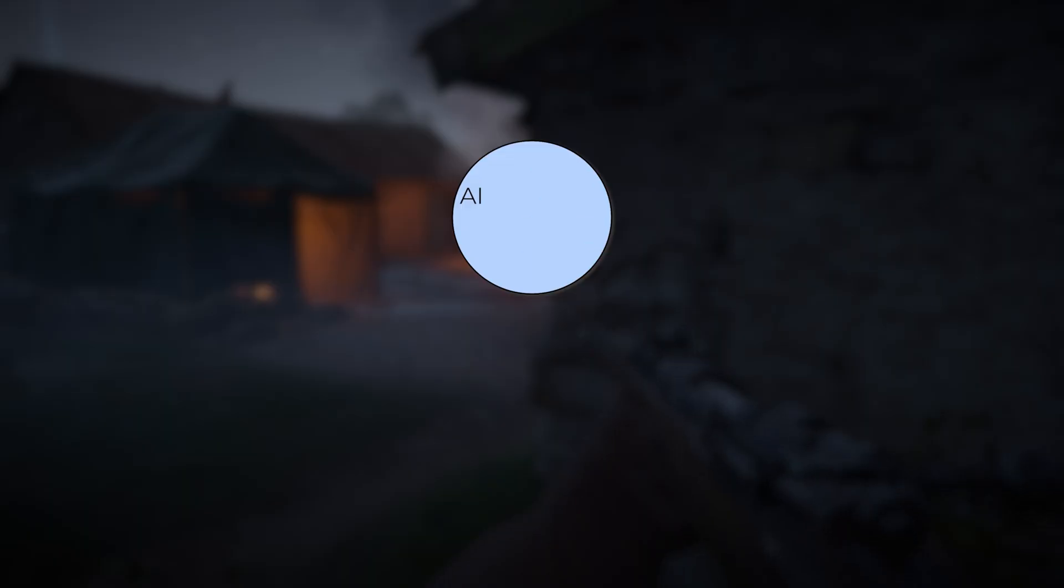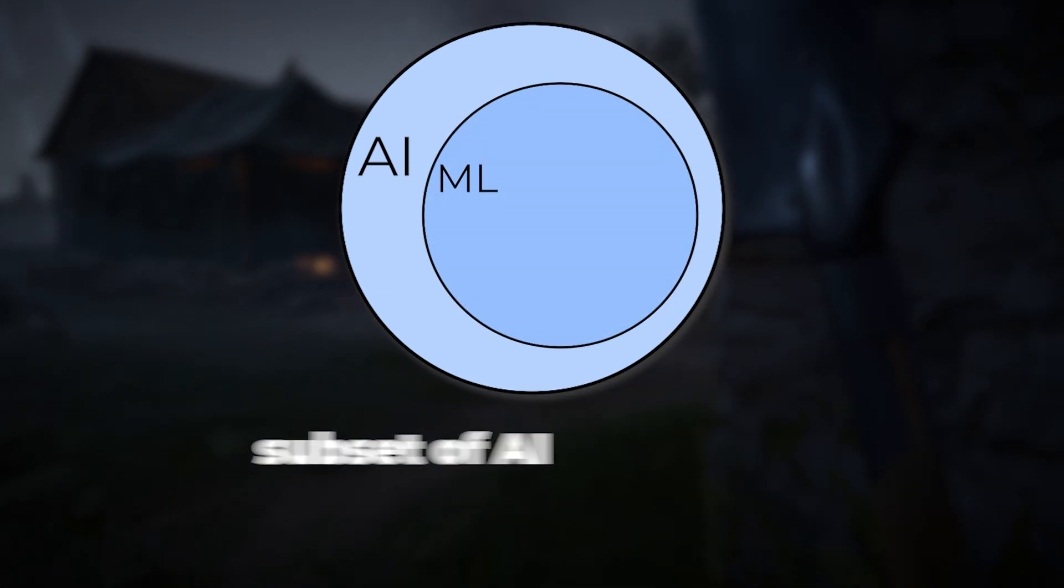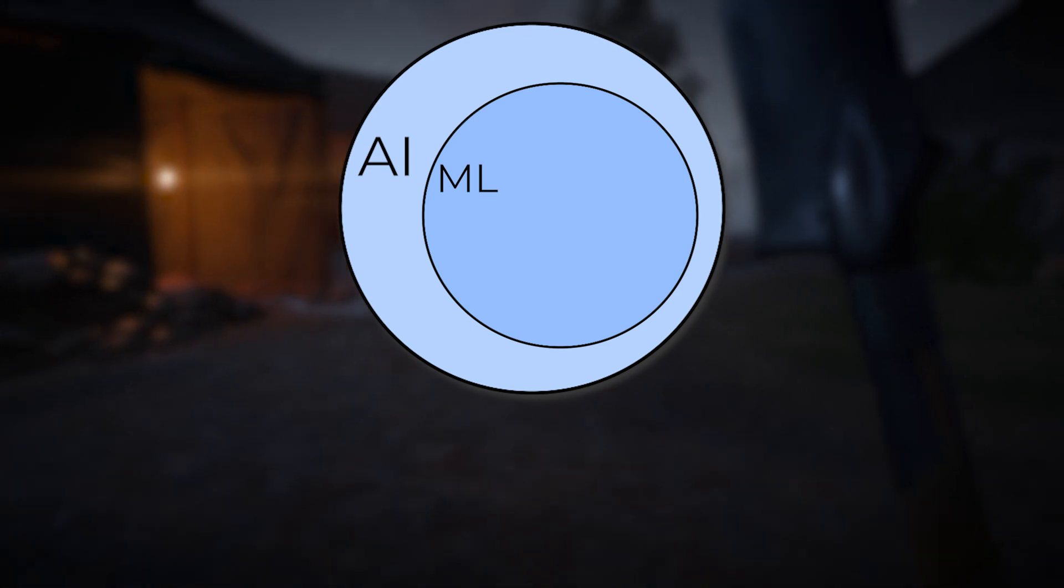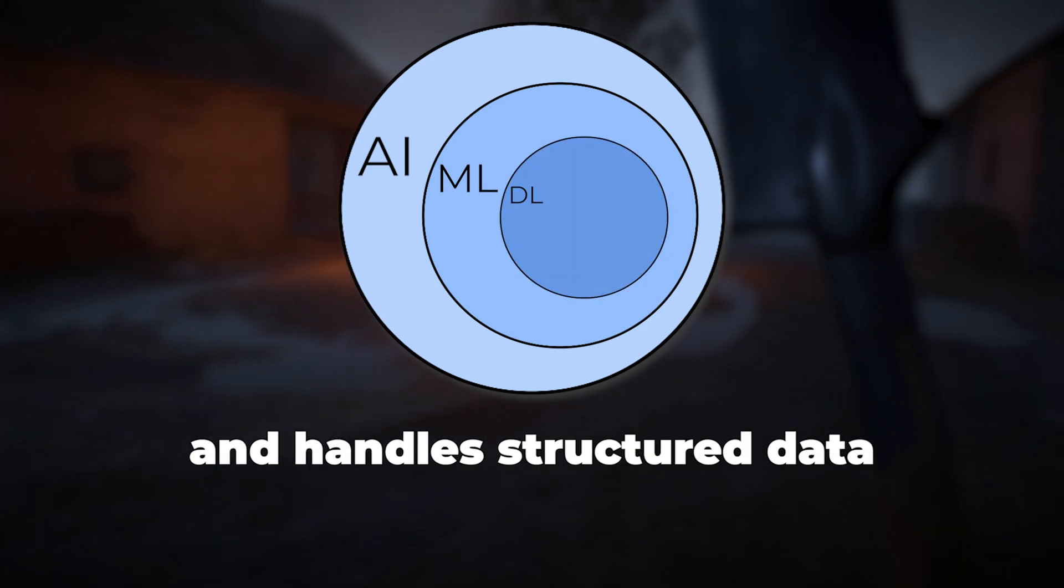So, in short, AI is the field that aims to create intelligent machines. ML is a subset of AI that deals with structured data and learns from experience. And DL is a subset of ML that uses neural networks and handles unstructured data.